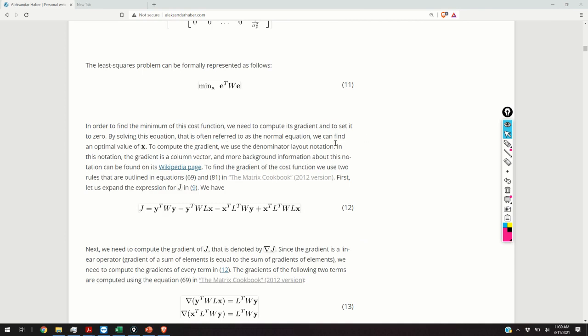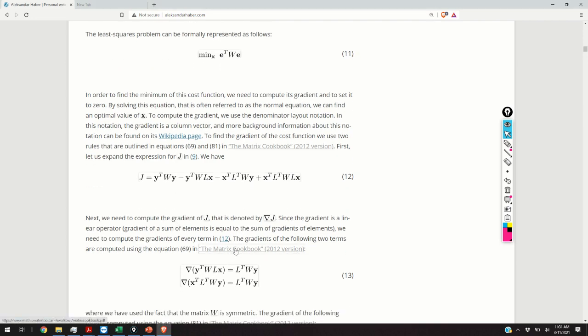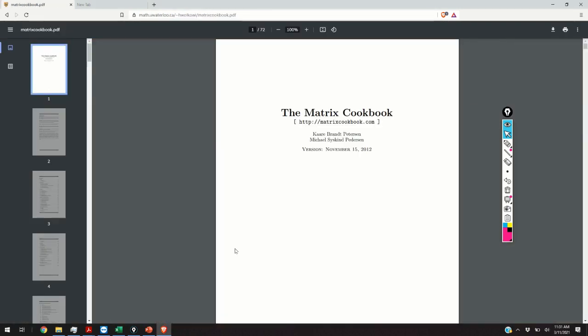So, how to solve the least squares problem given by the equation 11? The first step is to expand the cost function, and the expanded form is given by the equation 12. The next step is to compute the gradient of this cost function, and to set it to 0. So, how to compute the gradient of this cost function?